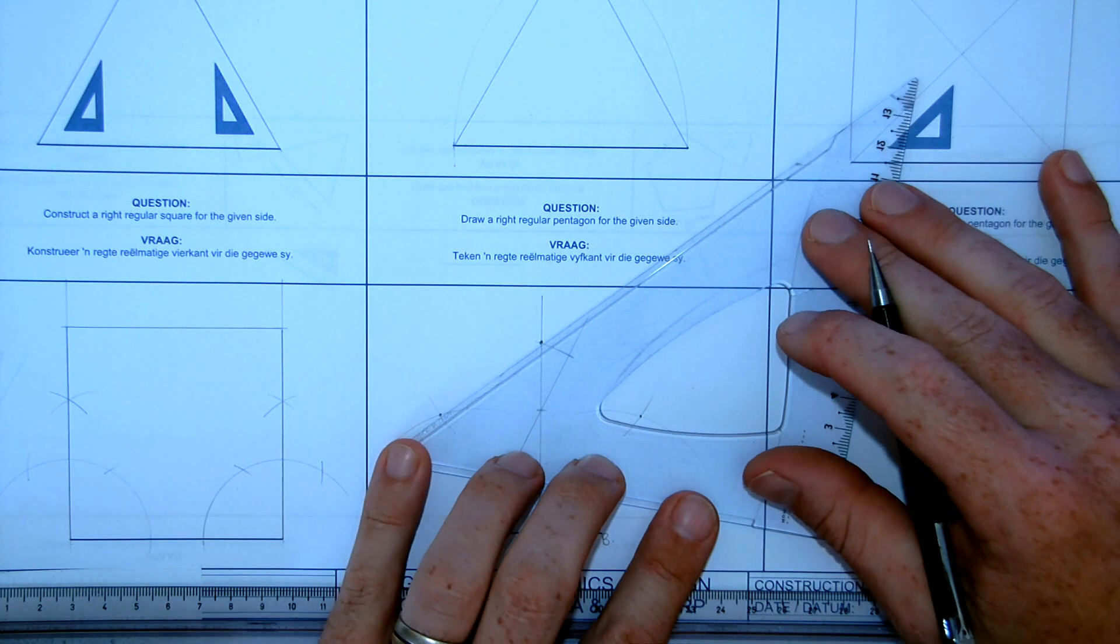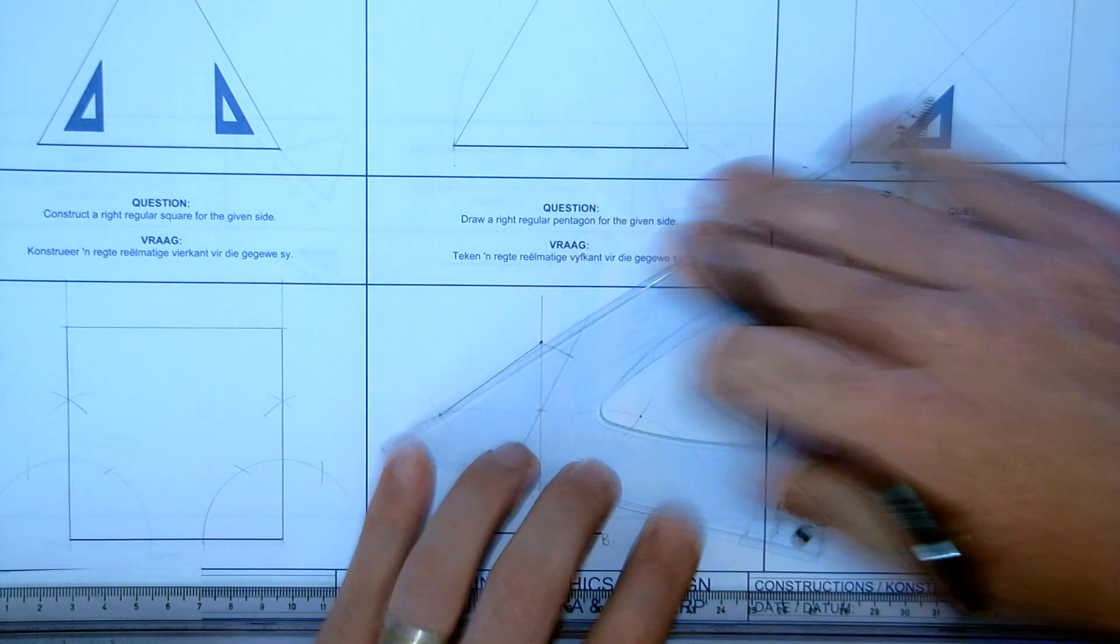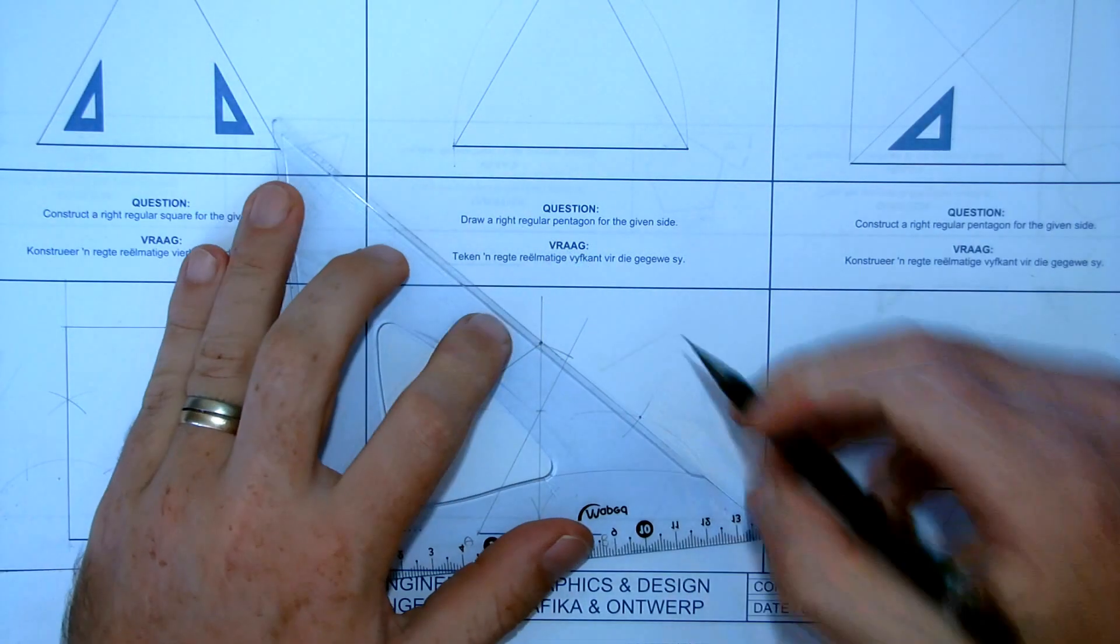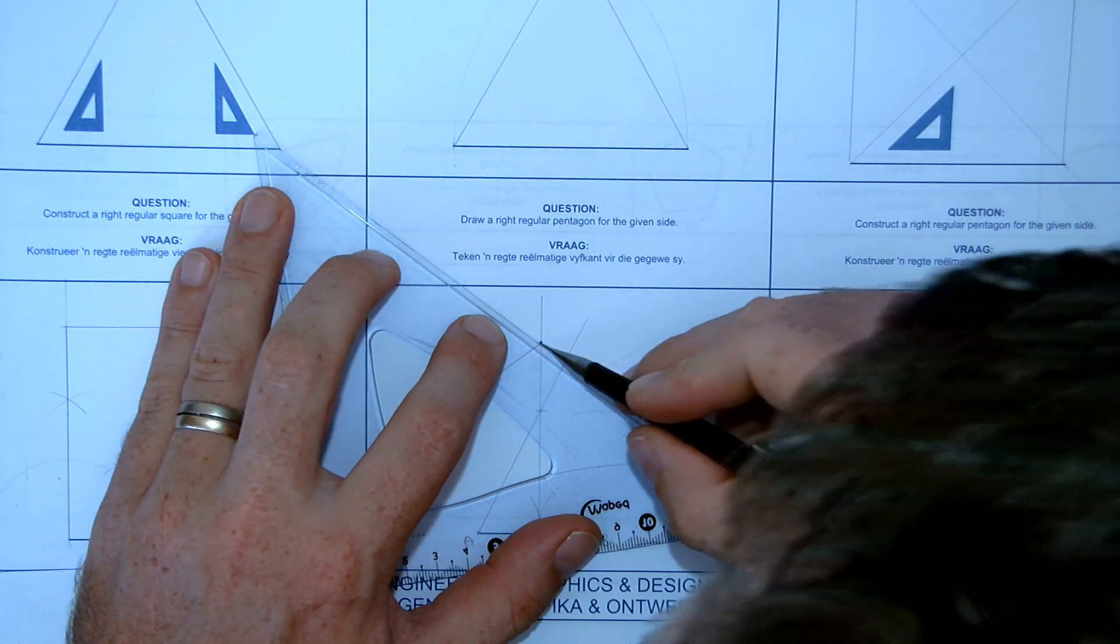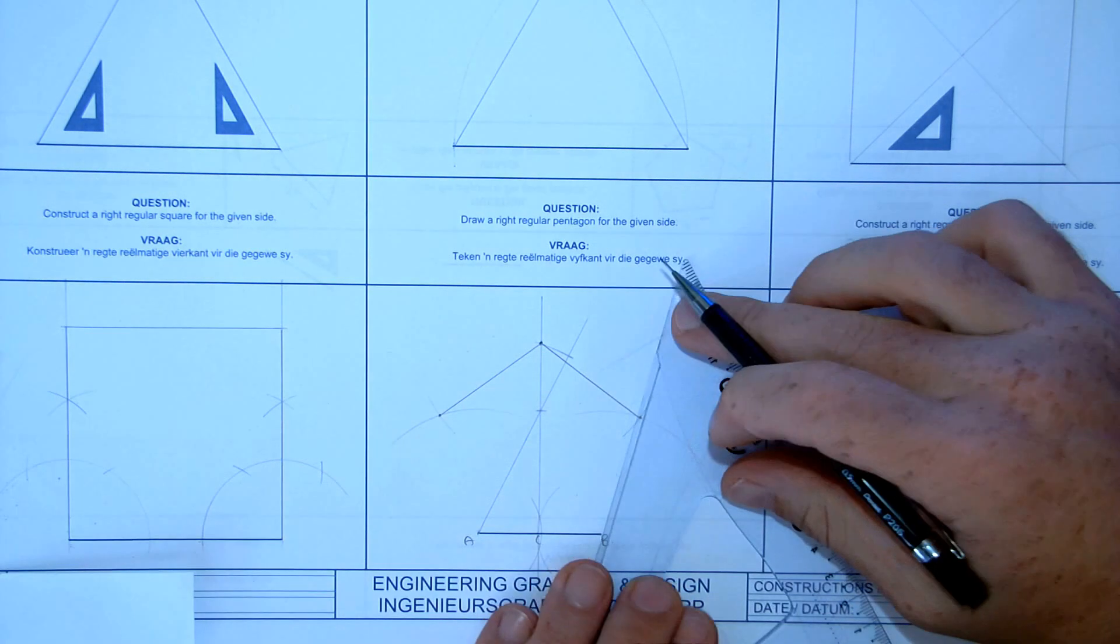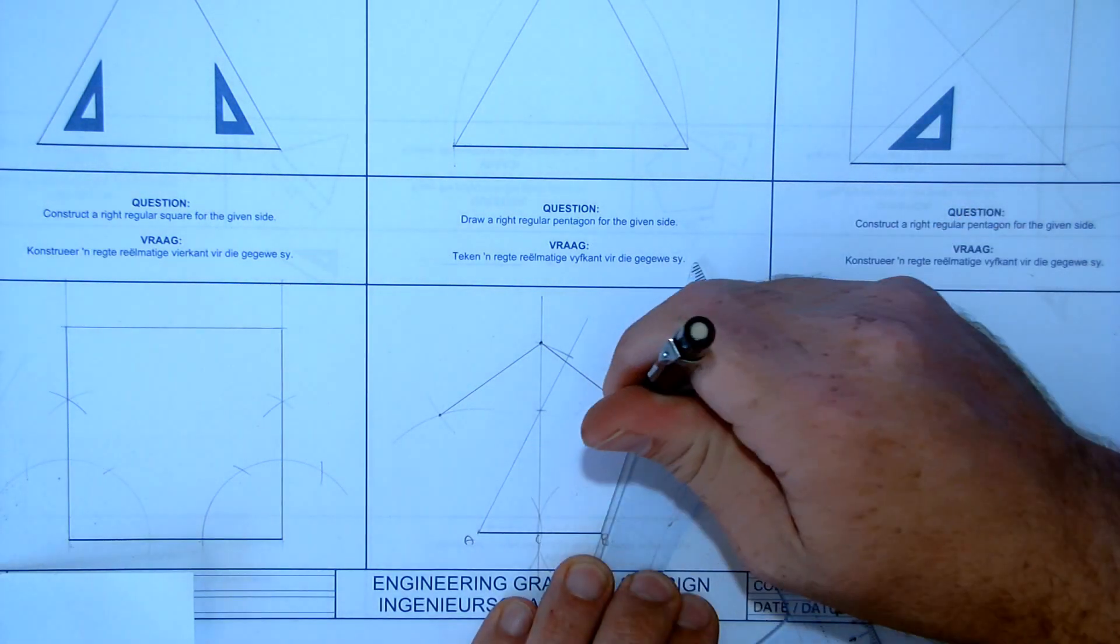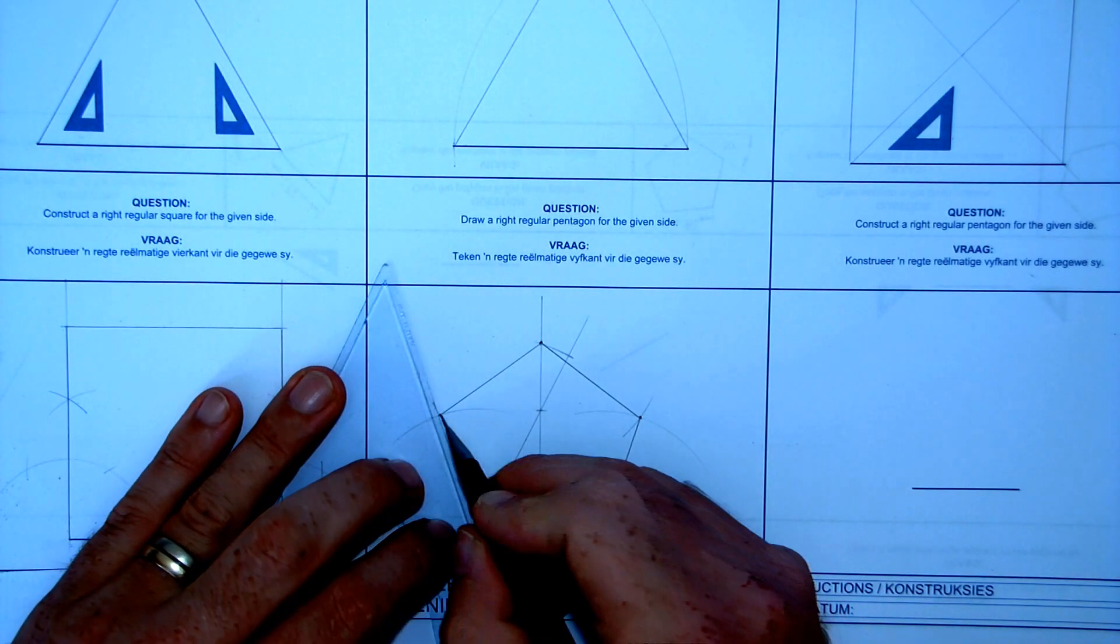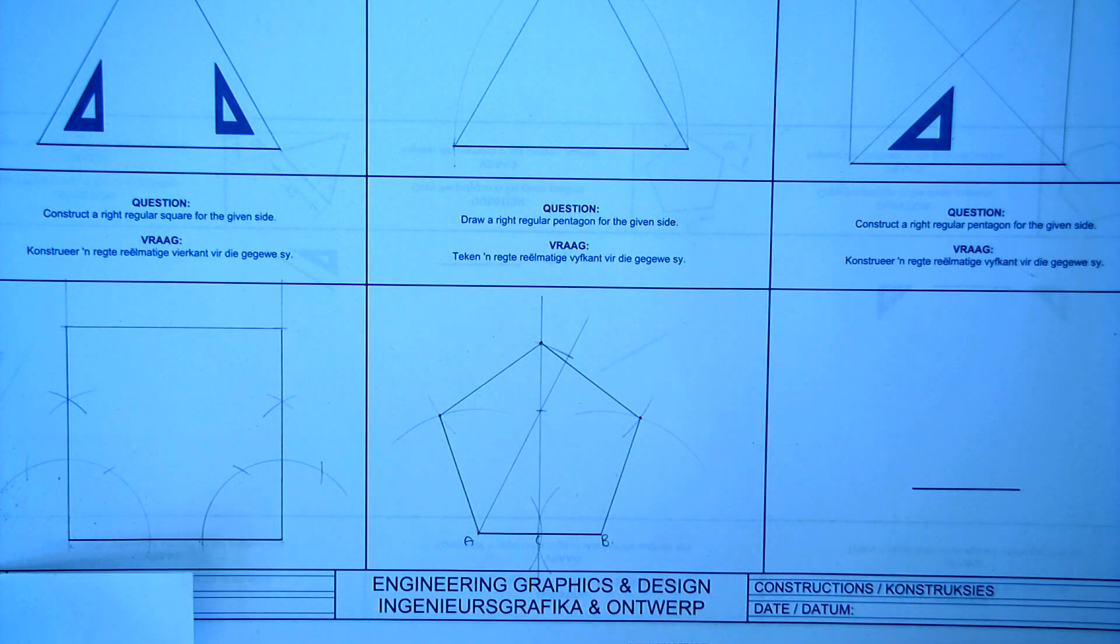Now, all I have to do is connect up this corner to that corner. That corner to that one. Connect B to the outer corner. Connect A to that corner. And there you go. My perfect pentagon.